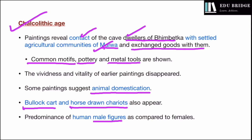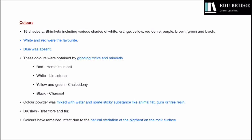Now let us look at the various colors and where they were obtained from. In all, there were 16 shades of colors used at Bhimbetka, including various shades of white, orange, yellow, red ochre, purple, brown, green, and black. White and red were the most popular. Blue is important because it was absent — it could not be obtained naturally. The colors were obtained by grinding rocks and minerals, so these were mineral colors, not plant pigments.